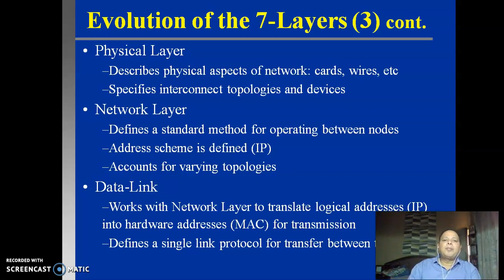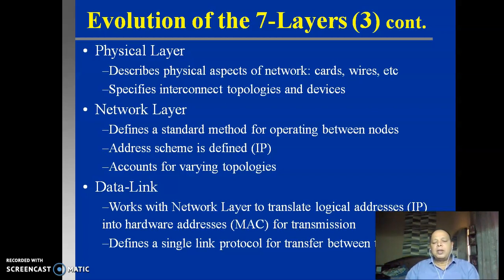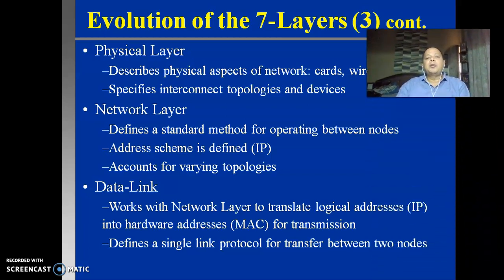We have seen in the first chapter the meaning of topology - the physical and logical arrangement of the network leads to topologies, describing how the devices are connected. So this physical layer specifies the interconnection and the topologies - how the nodes are connected physically and logically. That is why the devices are specified at this particular layer. The devices for actual transmission and reception come at this particular layer.